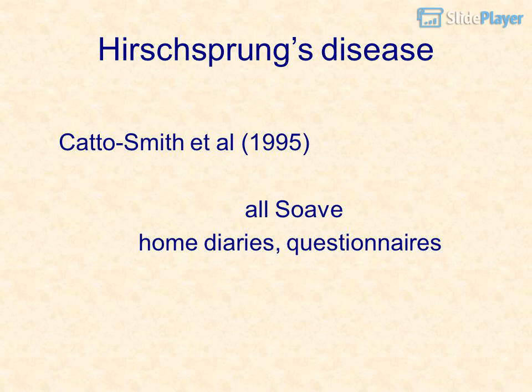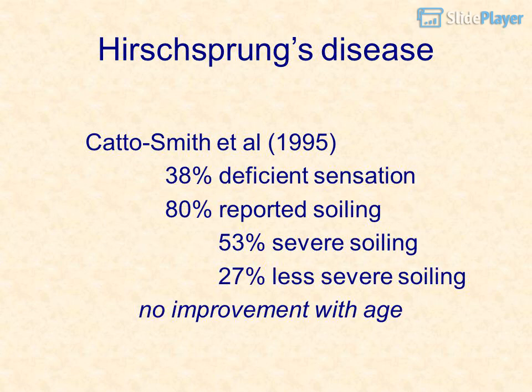Kato Smith et al., 1995: used home diaries and questionnaires. Results: 38% deficient sensation, 80% reported soiling, 53% severe soiling, 27% less severe soiling. No improvement with age.